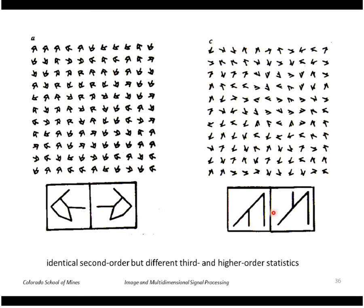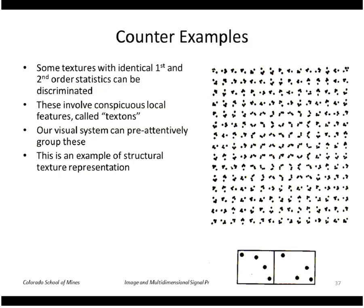Similarly for this shape over here. This is a very easy way to understand how humans can distinguish textures. Unfortunately, there is a counterexample. Here's a counterexample of a texture that is easy to recognize but has identical first and second order statistics.